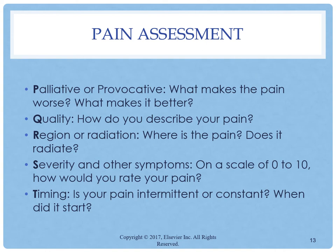For pain assessment, you need to know the PQRST framework for lecture, simulation, and clinical. P is palliative or provocative — what makes your pain worse, such as a position change? Q is quality — how do you describe your pain? Give patients freedom to explain. R is region or radiation. S is severity — this is when we use the pain scale. T is timing — is your pain intermittent or constant? When did it start?